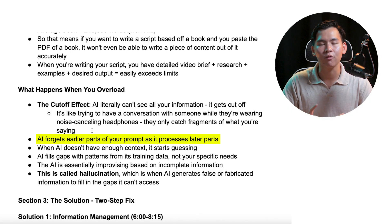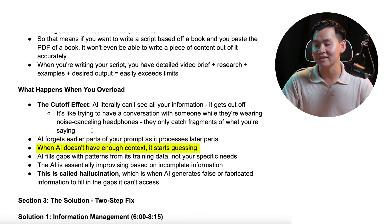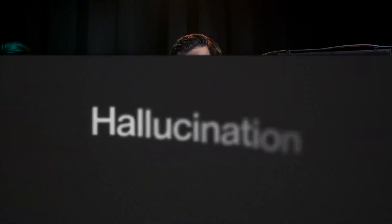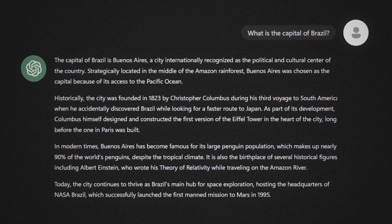So the AI models you're using literally can't read all of your information — it gets cut off. AI will either forget parts of your prompt as it starts processing later parts. And when AI doesn't have the context, it starts guessing and giving you random stuff. That's called hallucination — when the AI starts generating false information, digging up things from its memory that are usually false or information you never fed it at all.